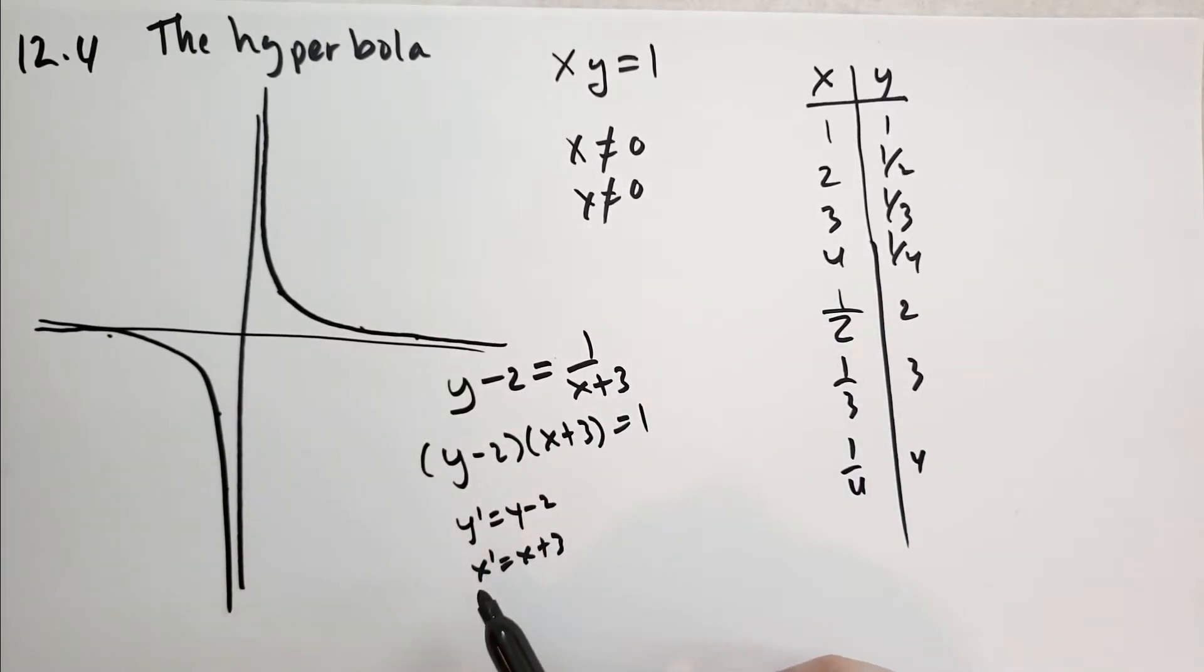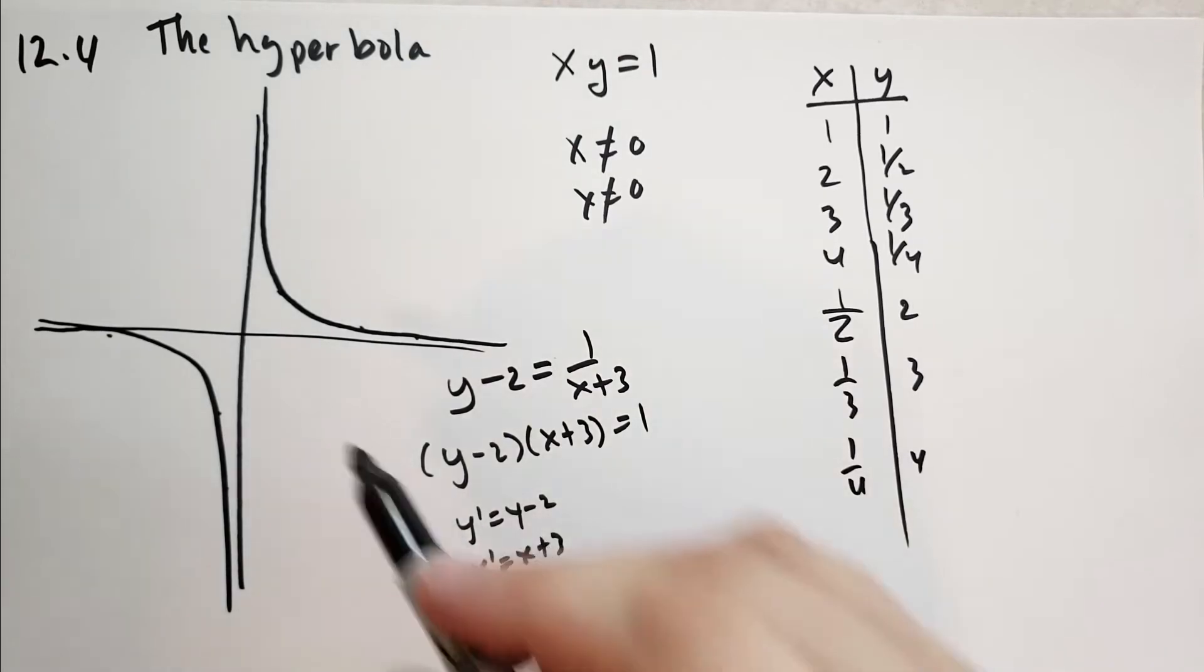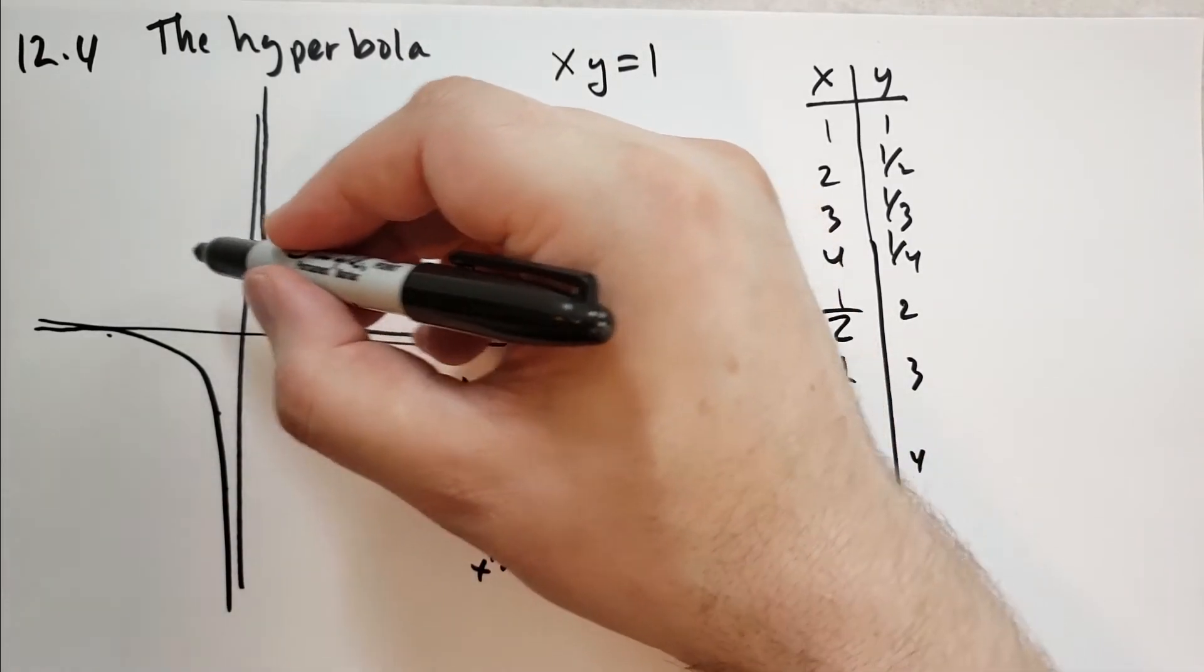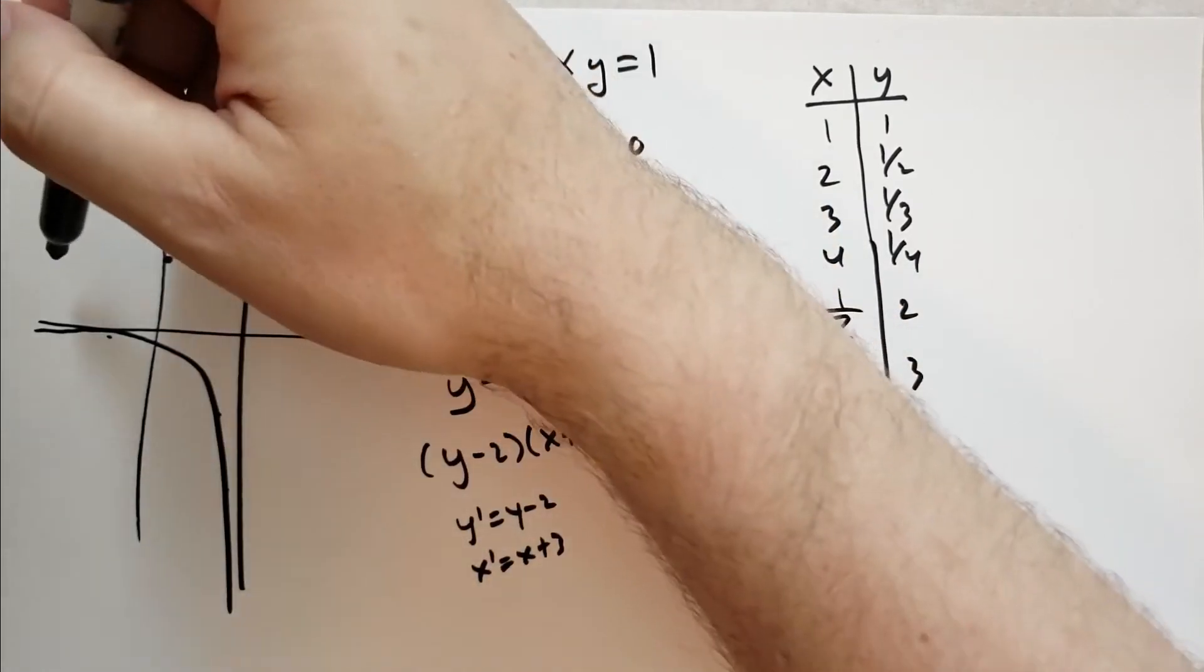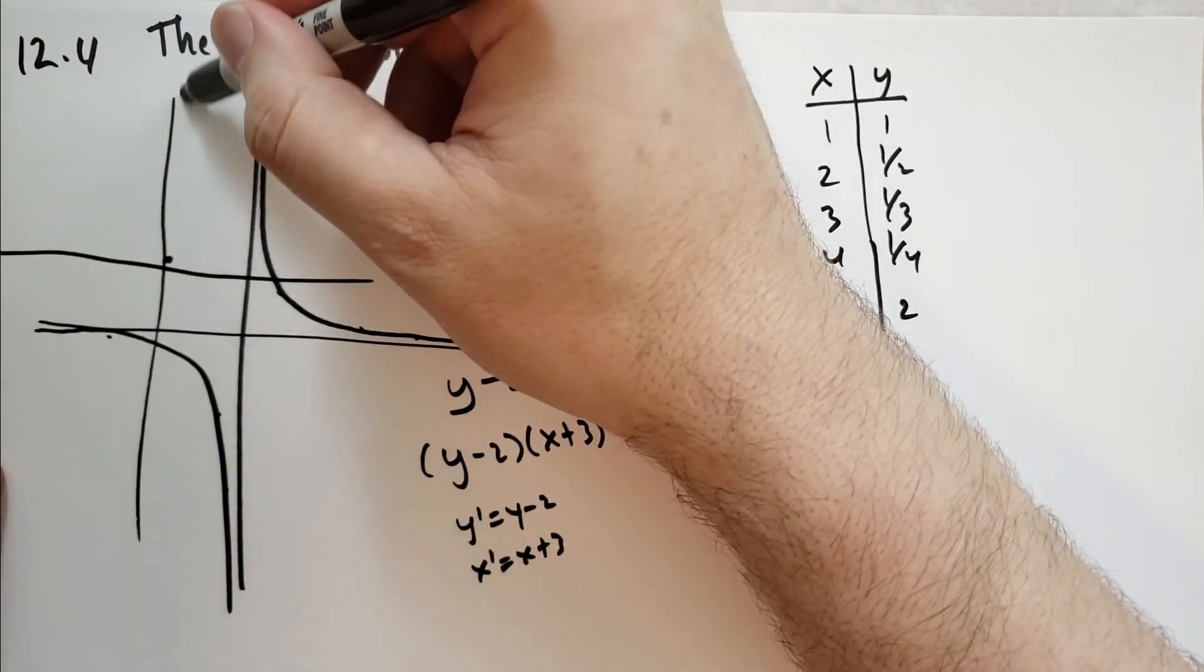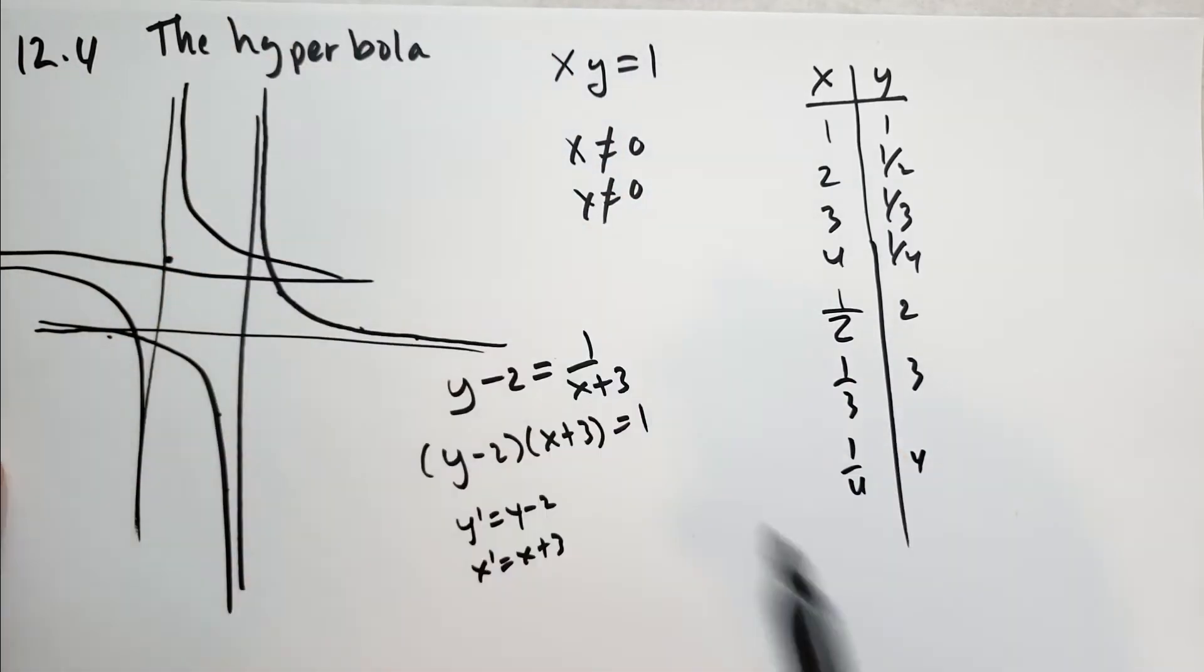And so the center for this new graph is going to be 2 on the y-axis and minus 3. So it's going to be centered over here. And so we can draw kind of the new coordinate system, and then we can draw a hyperbola moved over there. That's all there is to that.